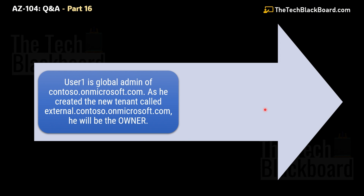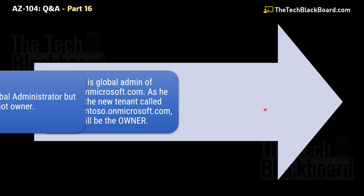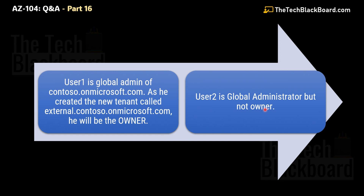By default, the user who creates the organization is added as an external user in that organization and assigned the global administrator role. Although User2 is also a global administrator, User2 still does not have any direct admin privileges on the new tenant named external.contoso.onmicrosoft.com. The only way User2 can perform the action of creating a new user on this external domain is if User1 explicitly enables User2 with the correct access. Both User1 and User2 are global administrators, but because User1 created this tenant, User1 becomes the owner and is therefore able to create the new user.